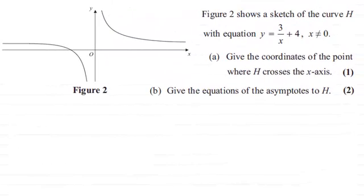Hi. Now, in this question, we're given that Figure 2 shows a sketch of the curve H with equation y equals 3 divided by x plus 4, where x doesn't equal 0. And in part a, we've got to give the coordinates of the point where H crosses the x-axis. And then in part b, give the equations of the asymptotes to H.